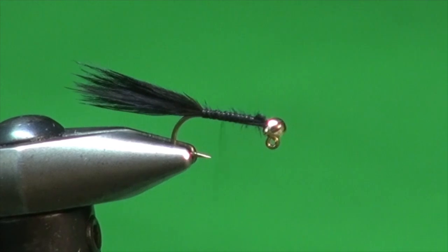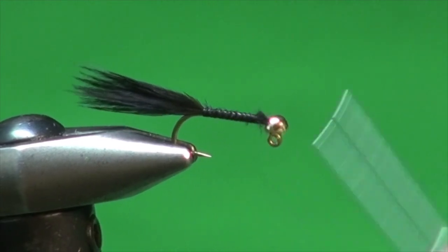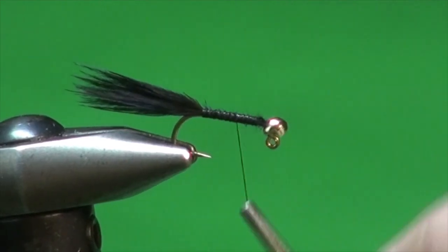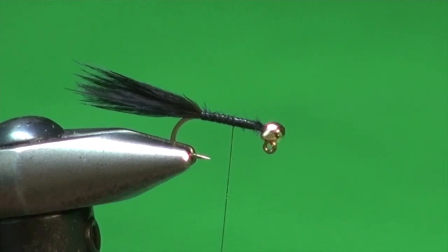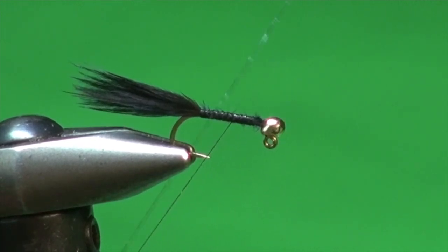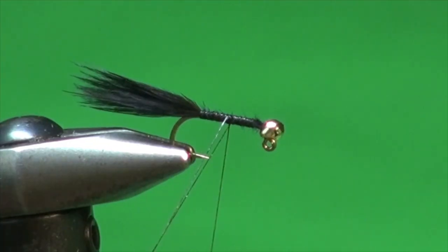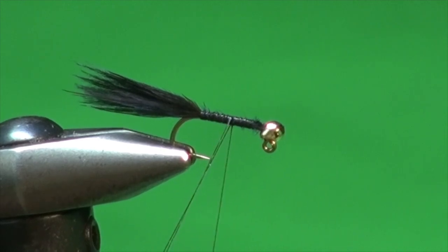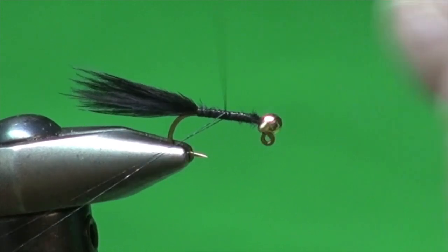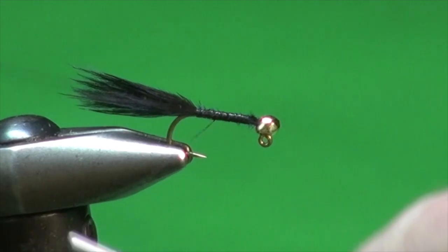And the rest of the fly is just a dubbed body. So we're just going to come up. I'm going to cover all this up. Go to about the midpoint. Form a dubbing loop. Bring that tying thread back up. I don't need a very big loop. We don't have a big fly here. I'm just going to reel in the thread here. And I'm just going to secure that.